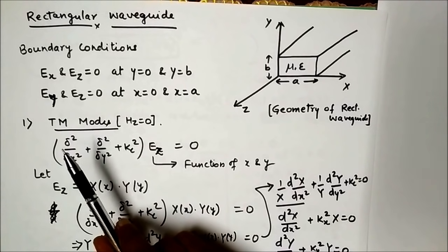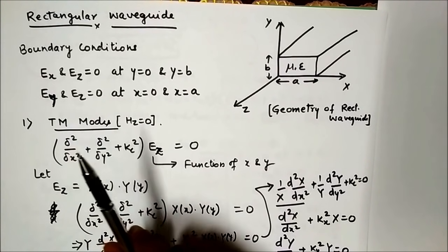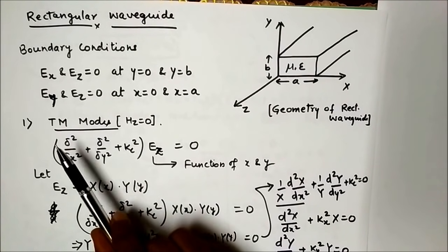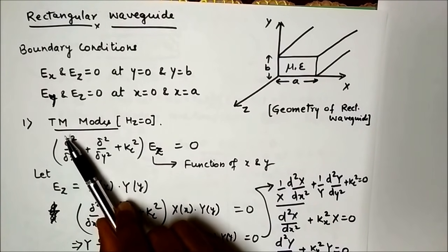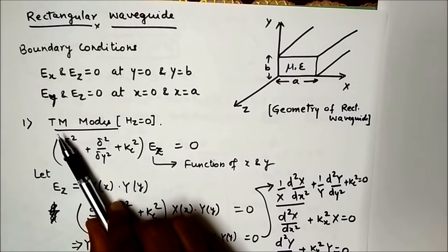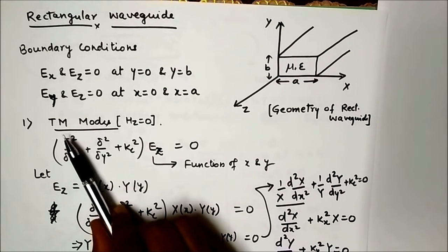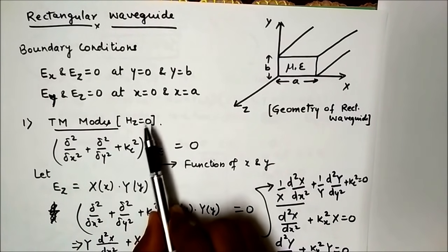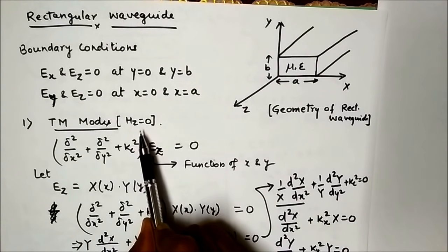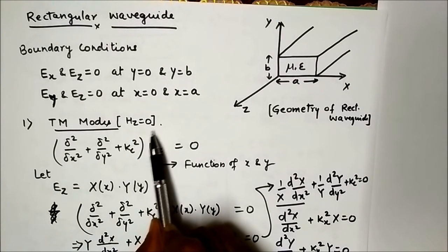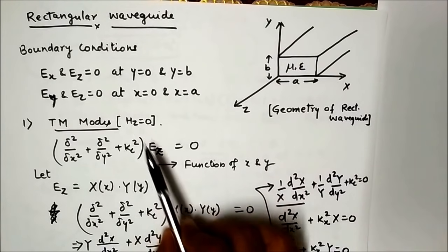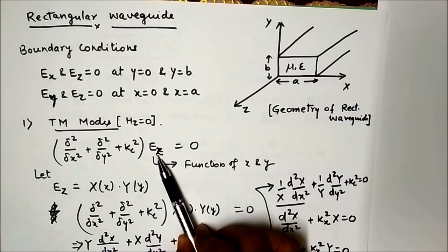So there will be only two types of modes: TE mode and TM mode. We are first going to see TM modes in rectangular waveguide. In TM mode, Hz equals zero, so we solve for Ez.